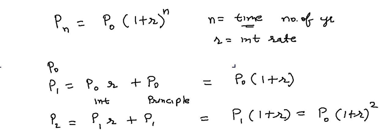If we do it in a similar way, we will end up with Pn equals P0 (1 plus r) raised to power n. This is how you calculate compound interest.